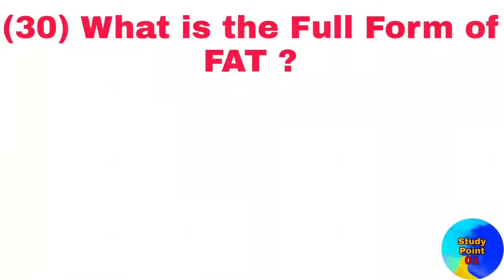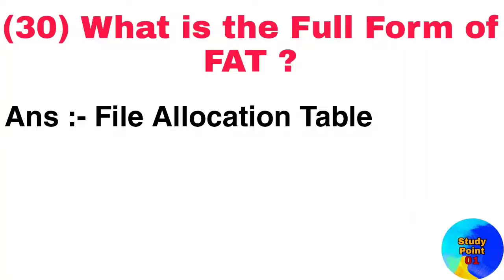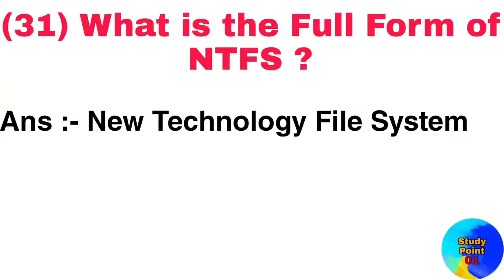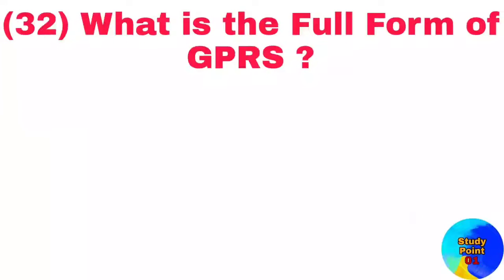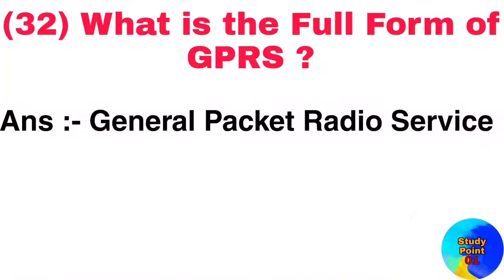Question number 30: What is the full form of FAT? Answer: File allocation table. Question number 31: What is the full form of NTFS? Answer: New technology file system. Question number 32: What is the full form of GPRS? Answer: General packet radio service.